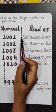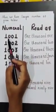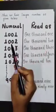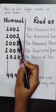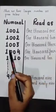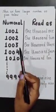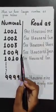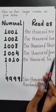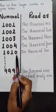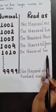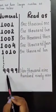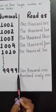Now how will you read these numbers? We will read 1001 as one thousand one, 1002 as one thousand two, 1003 as one thousand three, 1004 as one thousand four, 1010 as one thousand ten, and at last, the largest 4-digit number, 9999.